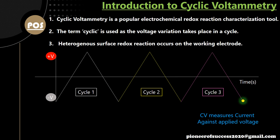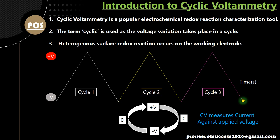Now we come to today's topic. That was the cyclic variation: minus V, to 0, to plus V, again 0, then minus V. So this cycle keeps going every time and that is why it's called cyclic voltammetry.